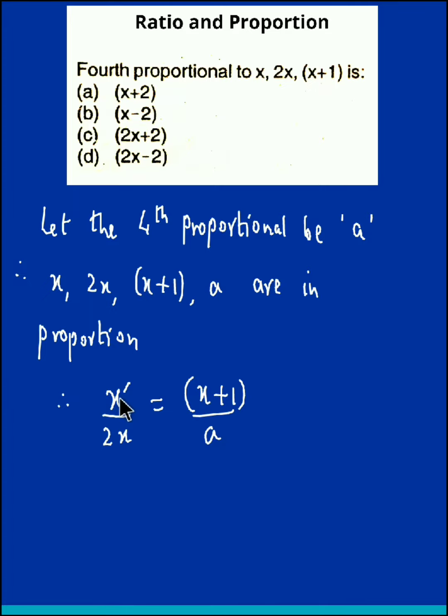Now, this x gets cancelled off. We multiply A onto the left-hand side. So we have A is equal to 2 times (x+1).